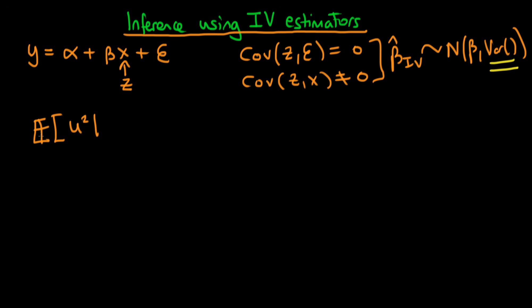We have to assume that the expectation of our error squared — keeping the notation the same — given our instrument Z, has to be equal to a constant sigma squared. Note that this is exactly the same form as our homoskedasticity assumption, except that we've now replaced X, our independent variable, with Z.